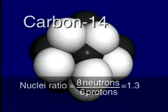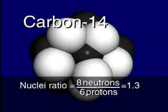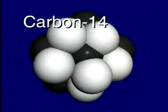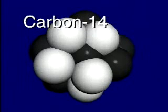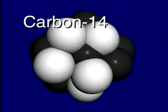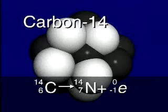The nucleus of a carbon-14 atom is unstable. At some time, this unstable nucleus will emit a high-energy electron called a beta particle, which has a one minus charge. The beta particle causes a neutron to change to a proton, and the carbon-14 atom then decays into a nitrogen-14 atom.